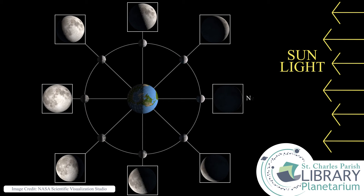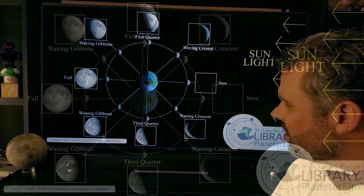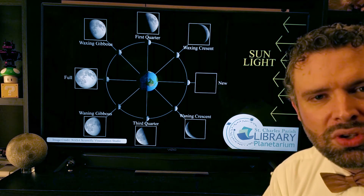This happens every month. We have the new moon, then we start to see a little crescent — the waxing crescent. Then we have our half moon or first quarter phase — first quarter because it's a quarter of the way around the Earth. Then the waxing gibbous — waxing means it's getting bigger, becoming more full. Soon we have the full moon, which rises in the east as the sun sets in the west. After that the moon starts to stay out into the morning — we start to see a waning gibbous, then a third quarter phase, and of course a waning crescent.